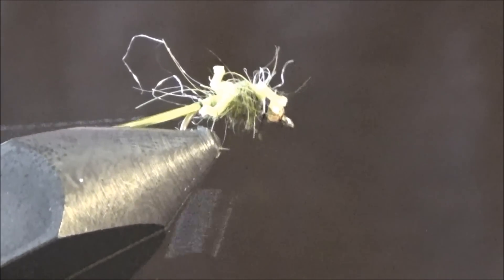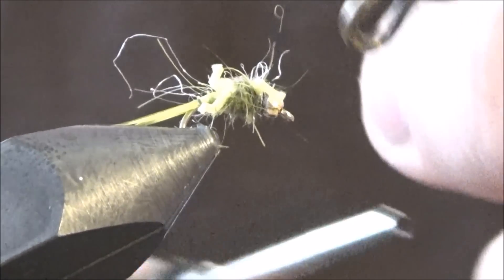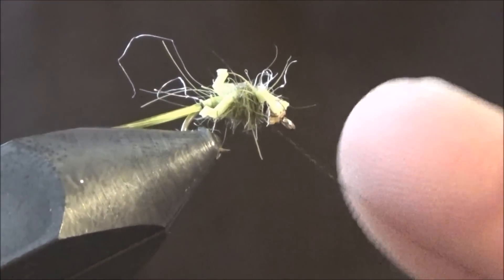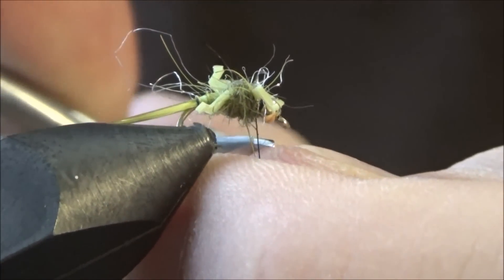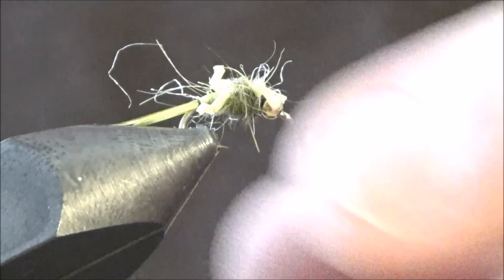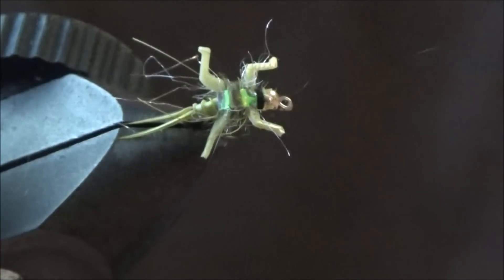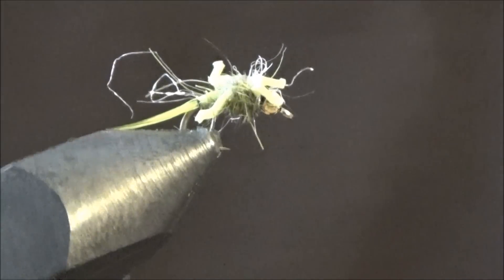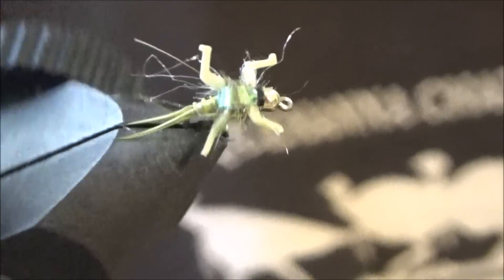Nice little Baetis, Blue-Winged Olive. Size 16. Cut your thread off. And there you go. A Lively Legs Baetis. Thanks for watching this video.